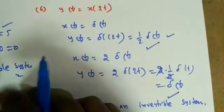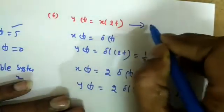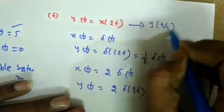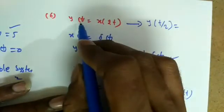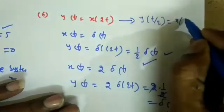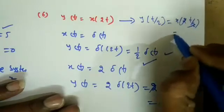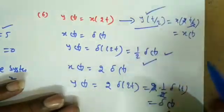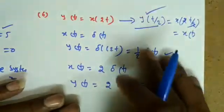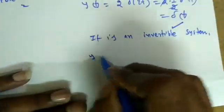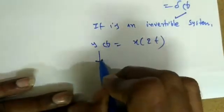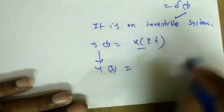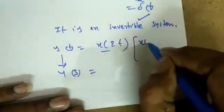To find the inverse system: from y(t) = x(2t), we can substitute directly. If we evaluate y at t/2: y(t/2) = x(2·t/2) = x(t). So the inverse is simply w(t) = y(t/2). We can also verify using the Laplace transform with the scaling property: if x(at) has Laplace transform (1/|a|)·X(s/a), then for y(t) = x(2t), Y(s) = (1/2)·X(s/2).